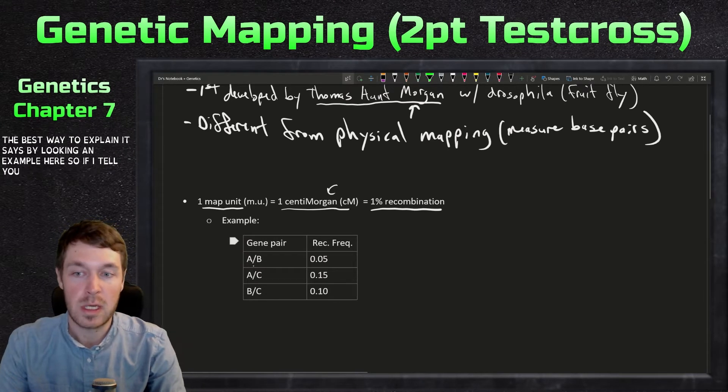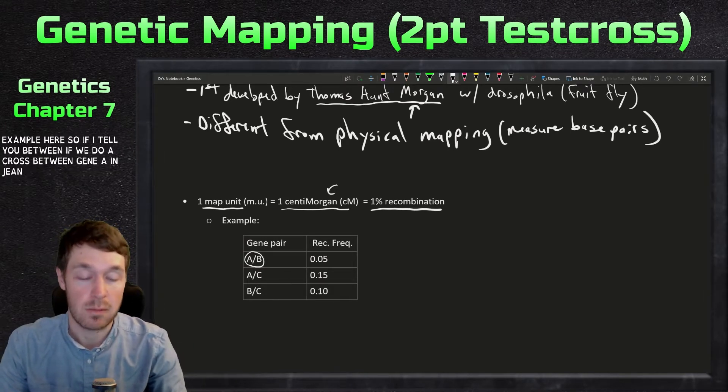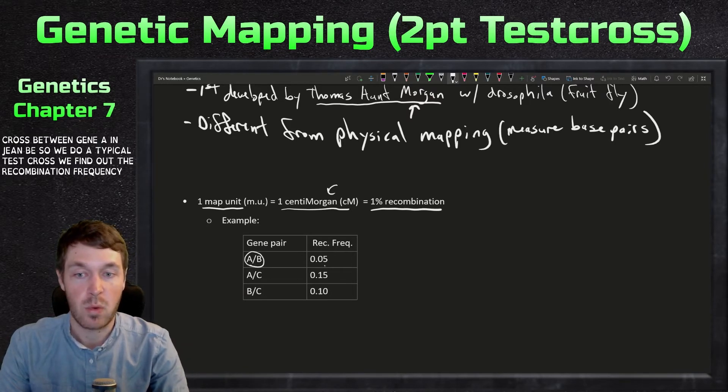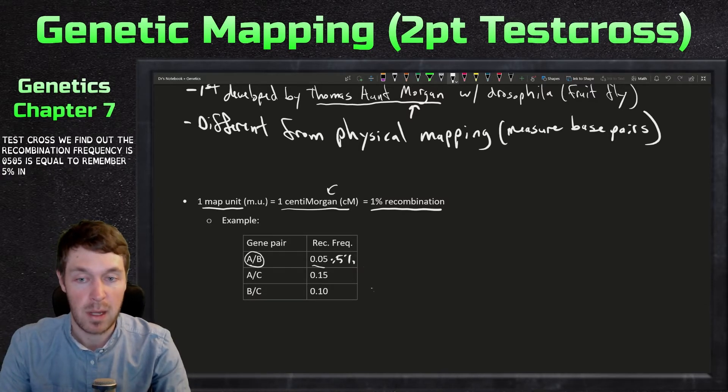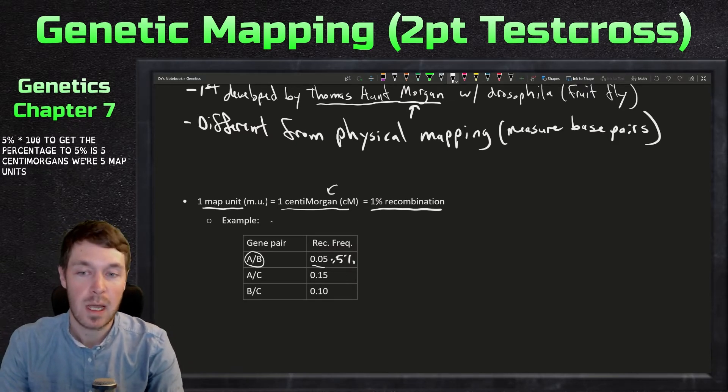The best way to explain this is by looking at an example here. If I tell you between gene A and gene B, we do a typical testcross, and we find out the recombination frequency is 0.05. 0.05 is equal to 5%. You multiply by 100 to get the percentage. So 5% is five centimorgans or five map units.